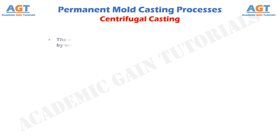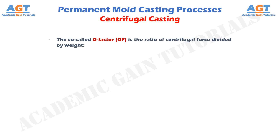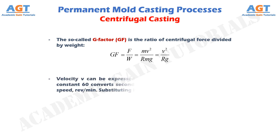The so-called G factor is the ratio of centrifugal force divided by weight. That is, GF equals F divided by W, equals M·V² divided by R·M·g, which simplifies to V² divided by R·g.